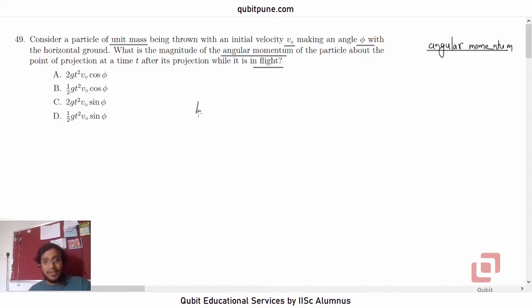They want us to determine the angular momentum. We will start with the vector notation this time because they want us to determine the magnitude and this is a 2D situation. So L bar is equal to R bar cross v bar or L bar is equal to R bar cross m v bar.